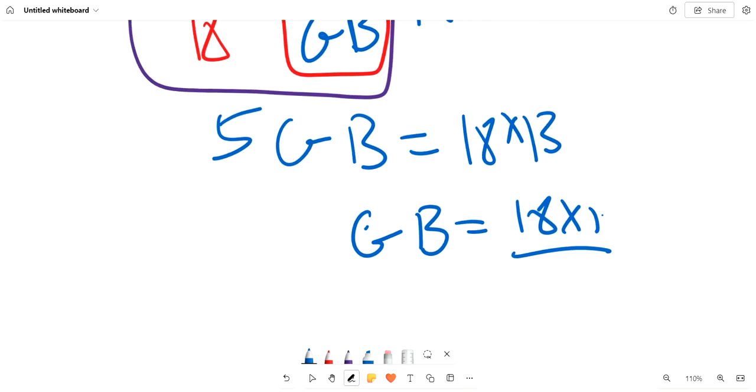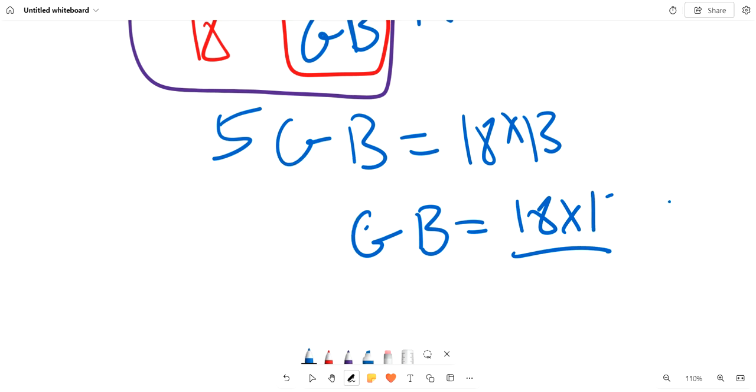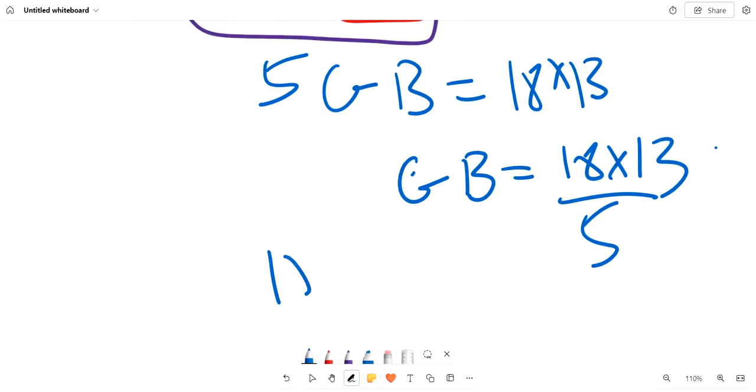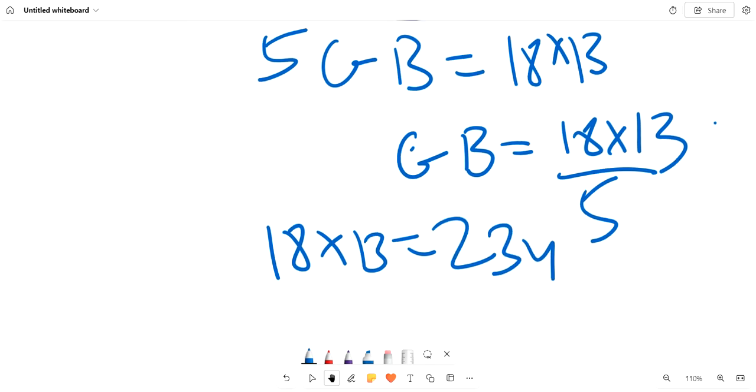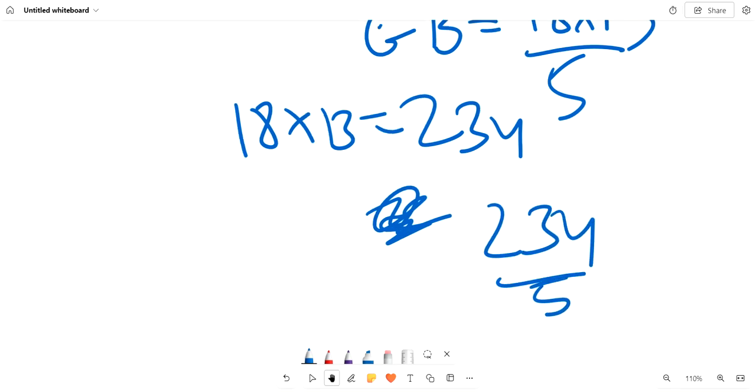18 times 13 over 5. When we multiply this out, we get 18 times 13 equals 234. And 234 over 5 equals 46.8.